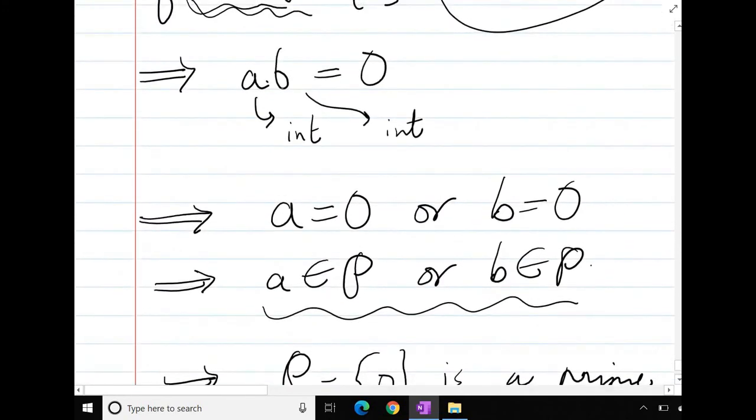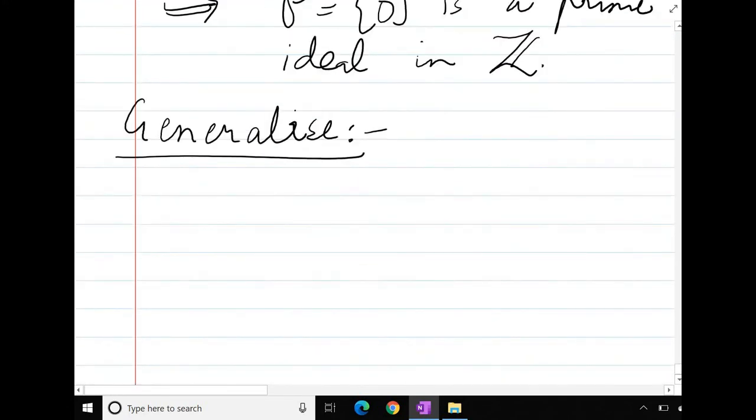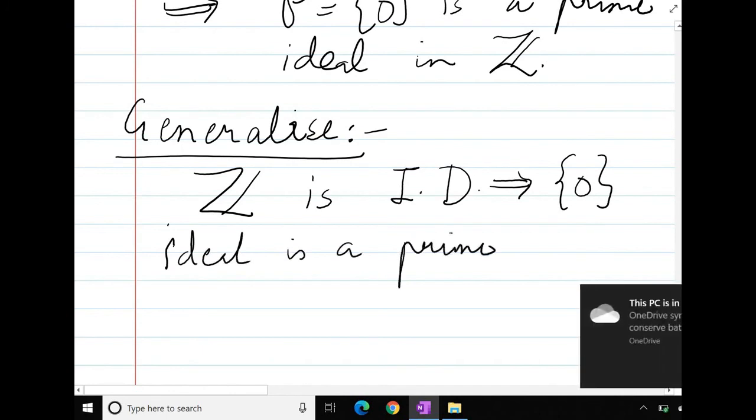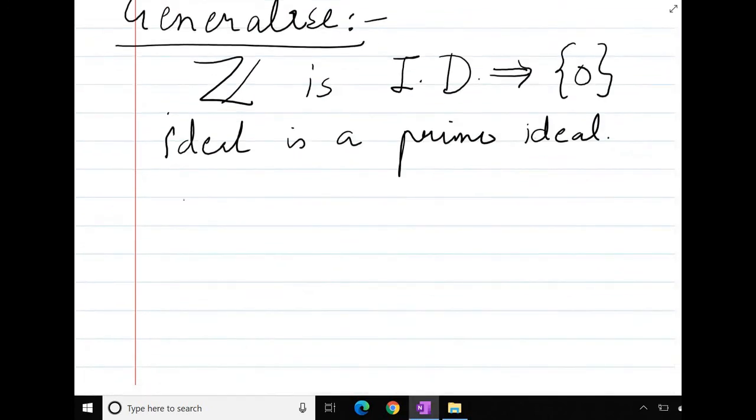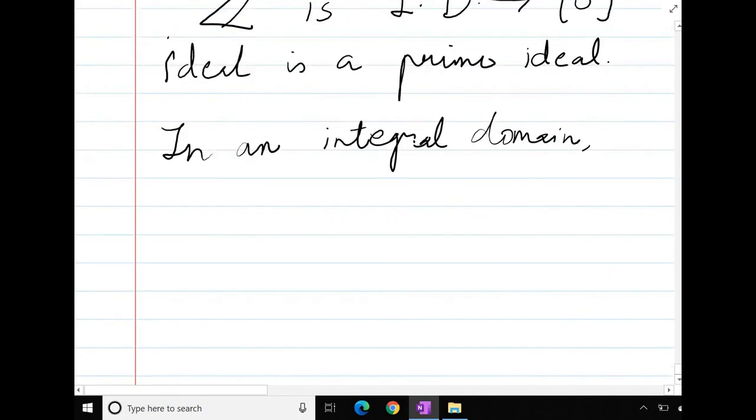What is the property of Z? If the product of two integers is zero then at least one of them has to be zero. What is this property? It's actually Z is an integral domain. That is an integral domain. Therefore, zero ideal is a prime ideal. Therefore, what I will write in general is, in an integral domain, zero is always a prime ideal.